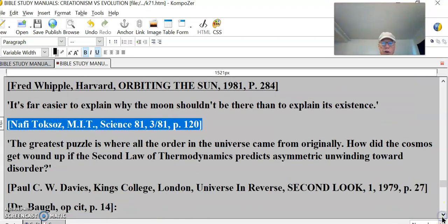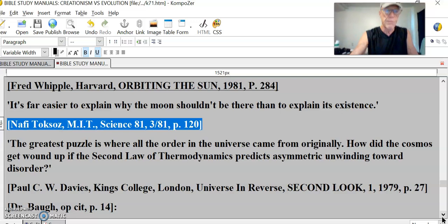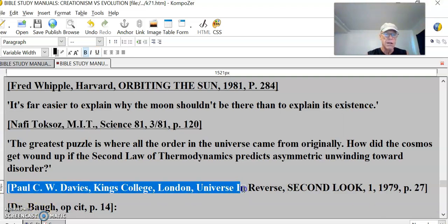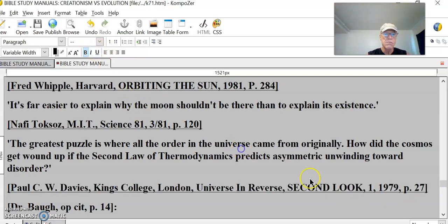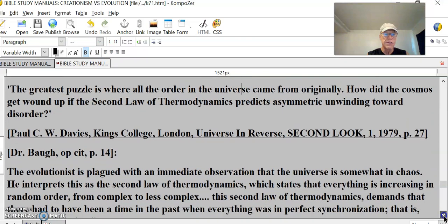The greatest puzzle is where all the order in the universe came from originally. How did the cosmos get wound up if the second law of thermodynamics predicts asymmetric unwinding toward disorder? Paul C.W. Davies, King's College, London University.